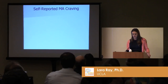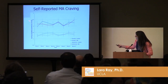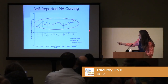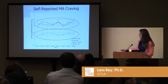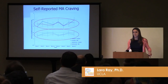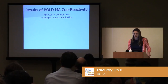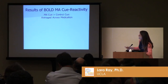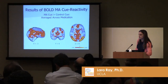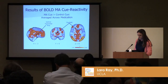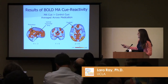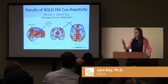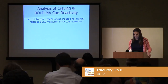Before I get into the BOLD response, let me show you the subjective rating. This is a standard self-reported urge rating for methamphetamine, and you can see right away that when the meth cues are presented, ratings are much higher than when the control cues are presented. In this design, we did not detect medication effects on subjective ratings. Now for the BOLD results, contrasting meth cue to control cue across medications, we see a pretty robust pattern of activation including VTA, caudate, and precuneus, giving us good confidence that the task engaged the circuitry expected in these kinds of studies.